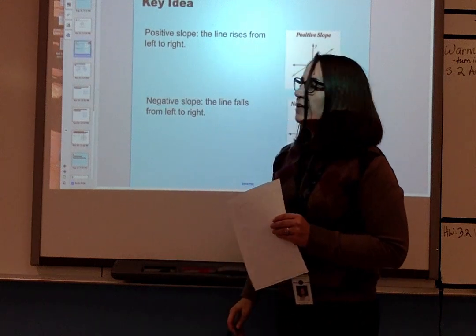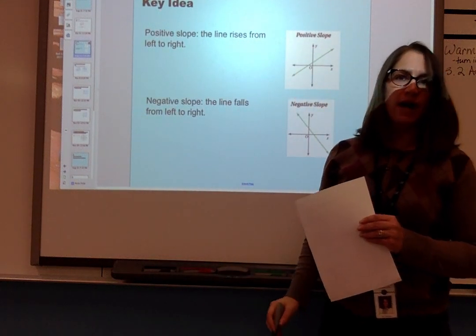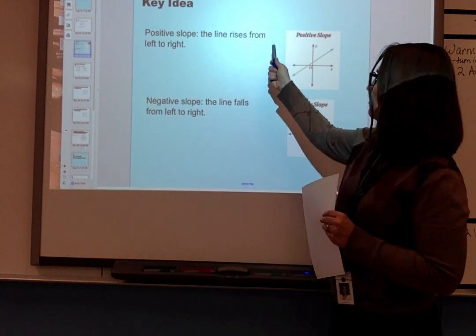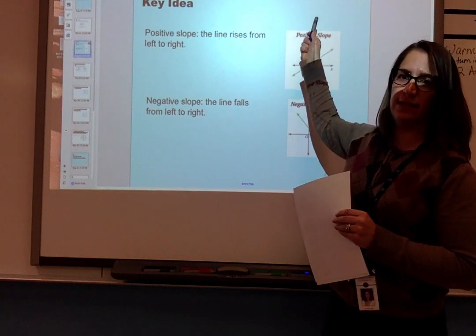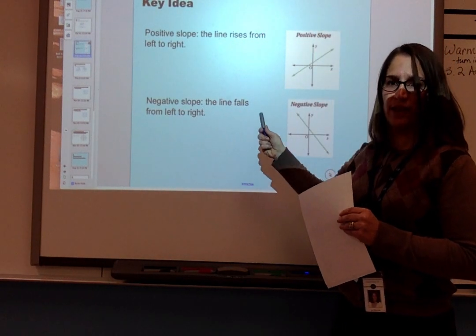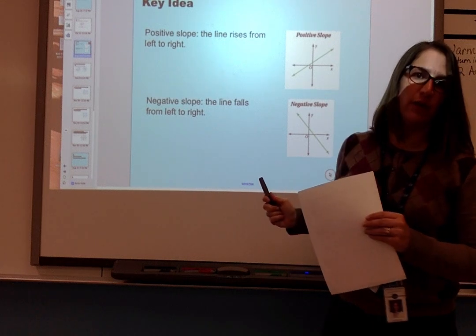We also need to know about positive slopes and negative slopes. A positive slope means that as you're moving from left to right, the line rises. A negative slope, as you're going left to right, it falls.